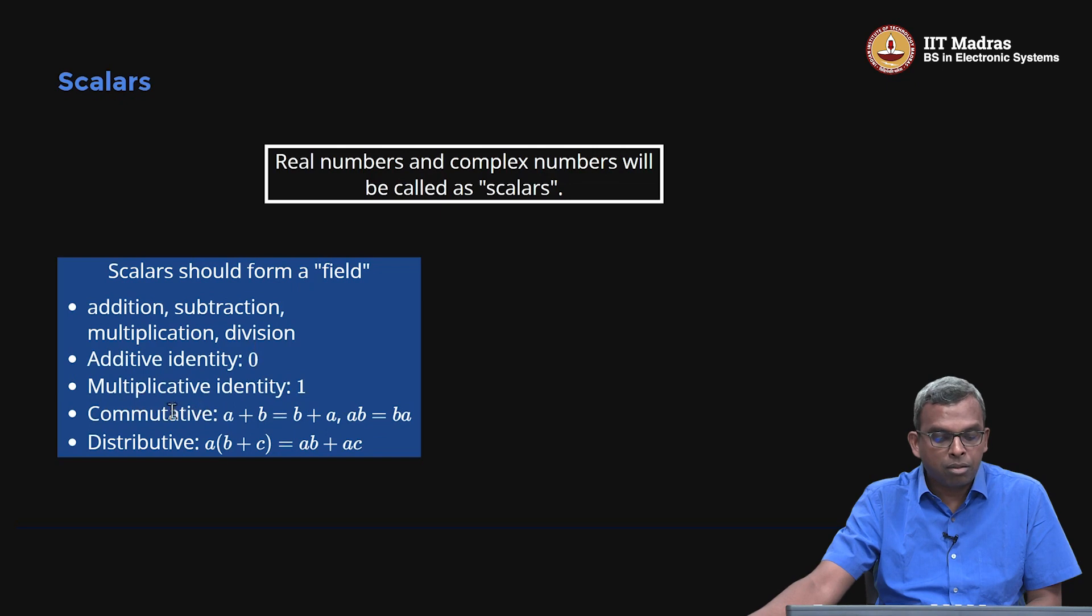Addition should be commutative, multiplication should be commutative. What is commutative? Whether you do a plus b or b plus a, you should get the same thing, which is what you do in real and complex. Then there's the distributive property: a into (b plus c) should be ab plus ac. These properties are needed to make a proper field, and we'll use these properties when we do operations with vectors as well.